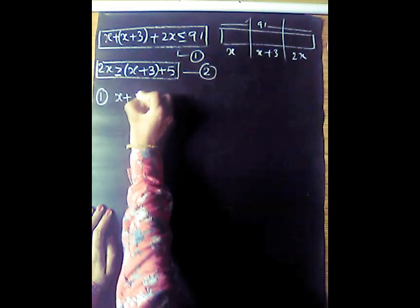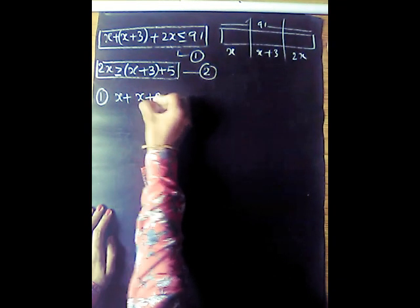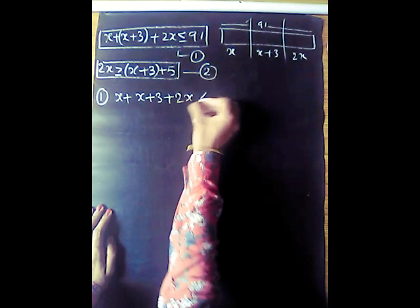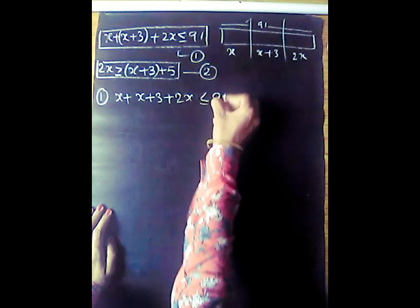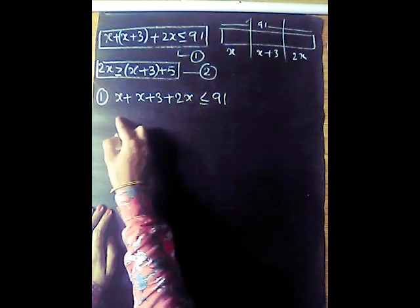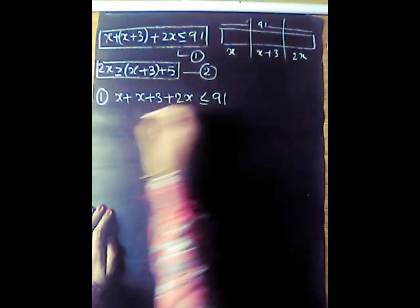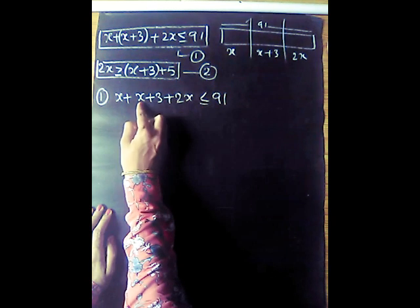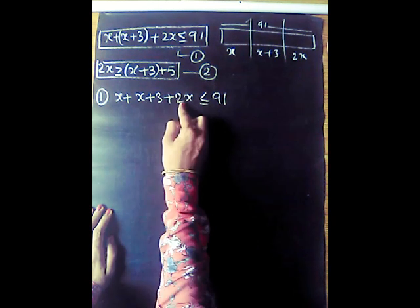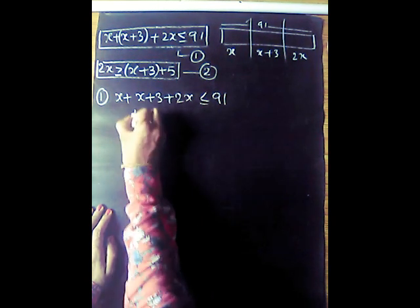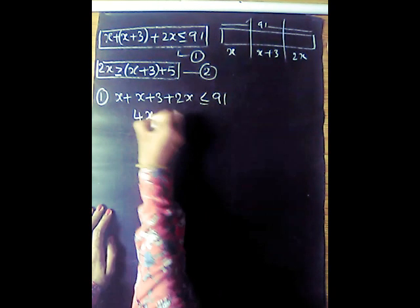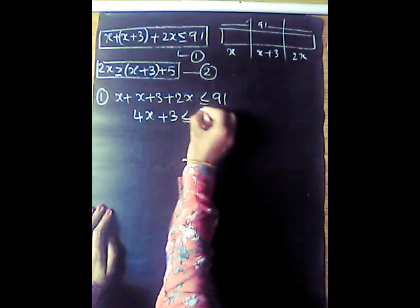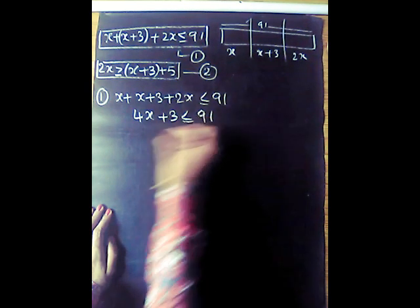For the total length condition: x plus x plus 3 plus 2x is less than or equal to 91. Combining like terms: 4x plus 3 is less than or equal to 91.